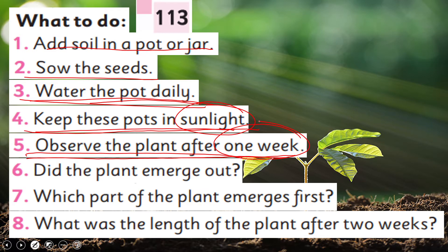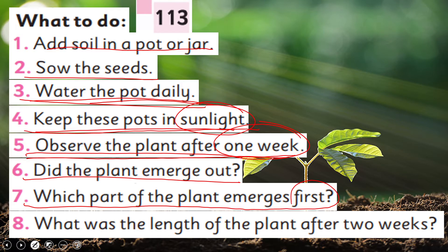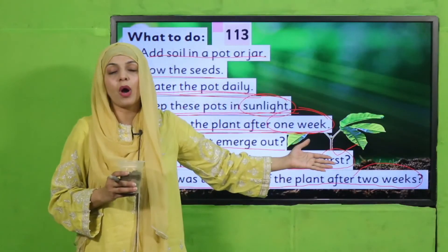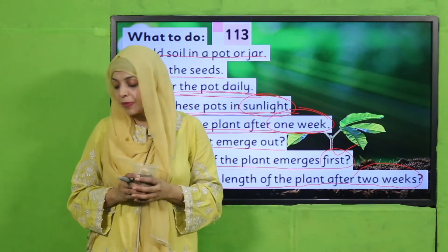After one week, observe the plant. Did the plant emerge out? If yes, write 'yes'; if no, write 'no.' Which part of the plant emerges first? If your plant has germinated, the part you will see first is the stem. After two weeks, take a scale and note down the length of the plant.